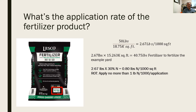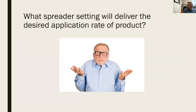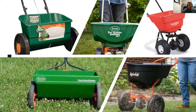As a rule of thumb for future reference, we recommend that you apply no more than one pound of nitrogen per 1,000 square feet at a single application. So what spreader setting do we use to deliver that desired rate of product? That's determined through a process called calibration.